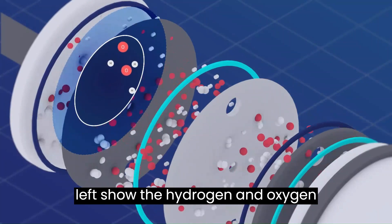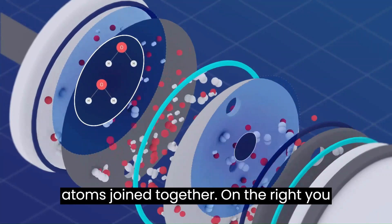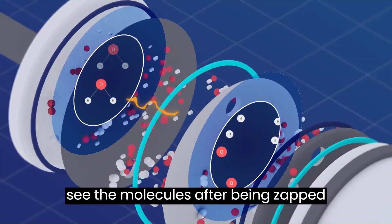On the left, the molecules show the hydrogen and oxygen atoms joined together. On the right, you see the molecules after being split with electricity.